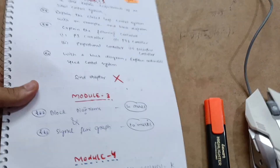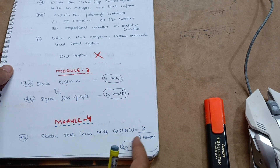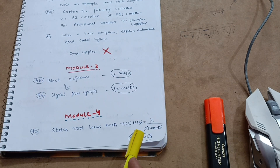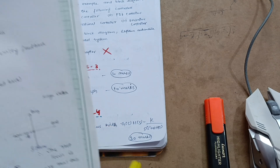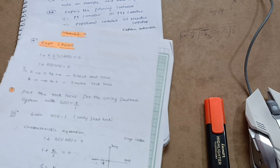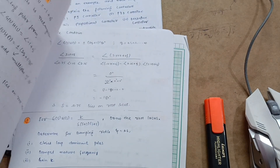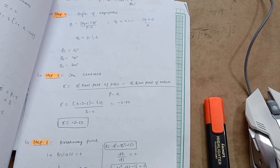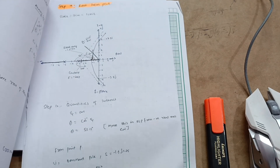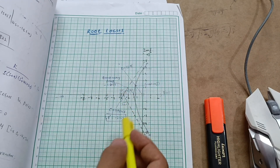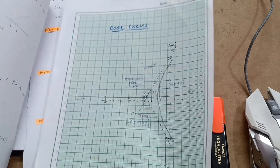Next is Module 4, which is Root Locus. For example: sketch the root locus with G(s)H(s) = K / [s(s²+4s+10)] — the feedback system transfer function will be given and it also carries 25 marks. I have already uploaded videos on this root locus 20-marks problem; I will provide the link in the description box. The problem has at least nine steps, which are very easy ones. I have discussed it in detail — please go through and understand the concept so you will get 20 marks with ease. The root locus diagram is very simple, which you will easily understand by watching that video.